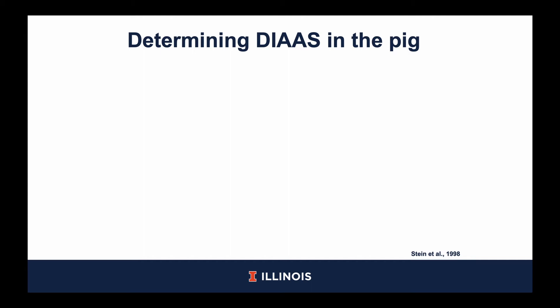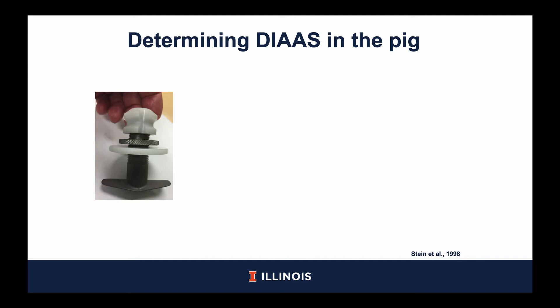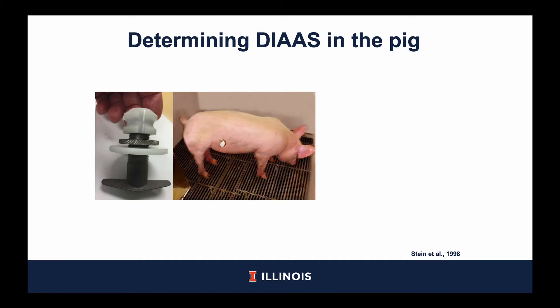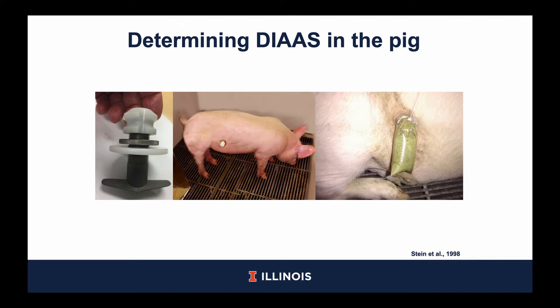As I mentioned, the FAO has identified the pig as the most appropriate model when determining protein digestibility for human foods. So how do we determine DIAAS in the pig? First, a T cannula is surgically inserted into the distal ileum of the pig. The pigs respond very well to this surgery and, as you can see by the second picture, the pig is up and acting natural with no irritation around the surgical site. During experimental periods, we allow the pig 5 days of adaptation to the diet and 2 days of collection. During collection days, ileodigesta are collected for 9 hours each day by removing caps and securing a 250 ml plastic bag to the cannula barrel via zip tie. The ileodigesta flowing into the bag are then collected. The bags are removed when filled or at least once every 30 minutes and immediately stored at negative 20 degrees Celsius to prevent bacterial degradation of amino acids.